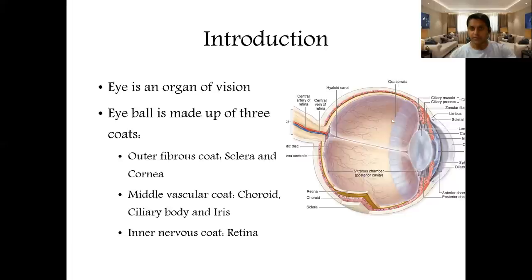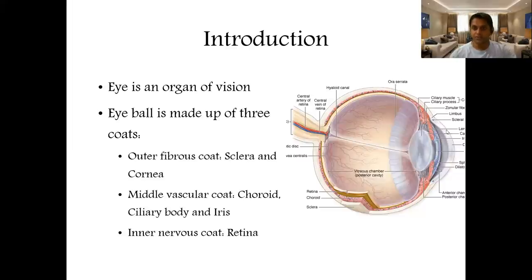The eyeball has a cavity divided into the anterior chamber and posterior chamber by the lens. The anterior chamber has aqueous humor and the posterior chamber has the vitreous body. When light passes from the anterior side toward the retina, it crosses through all transparent layers — the cornea, aqueous humor, lens, and vitreous body — so any opacity in this region will cause a defect in vision.